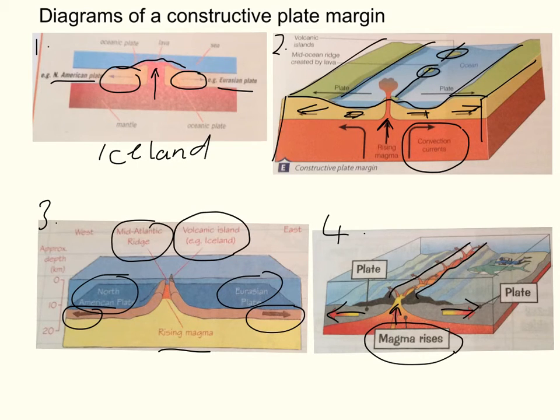So we get earthquakes as tectonic activity as the plates move apart, and we get volcanic islands and mid-oceanic ridges as our landforms. Make sure that you're able to draw a diagram of a constructive plate margin from memory, labelling on the key features of the mantle, the rising magma, convection currents, the plate movement, example plates, the volcanic islands, and the mid-oceanic ridges.